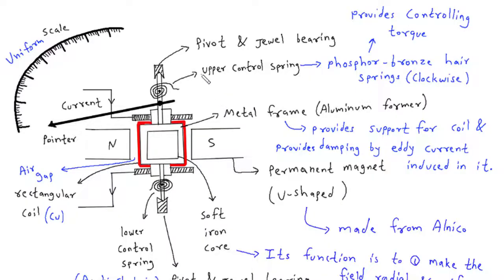Let's dive in. Pivot and jewel bearing upper side: this component consists of a small pivot and a jewel bearing. The pivot is a tiny pointed metal piece that serves as the axis of rotation for the meter's pointer.